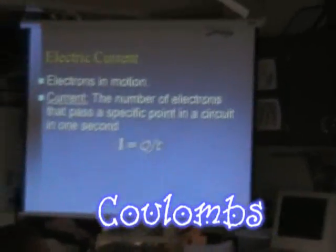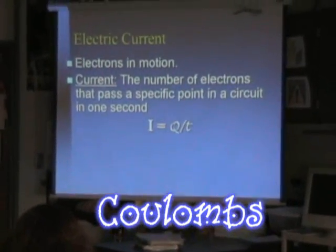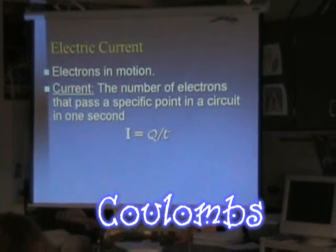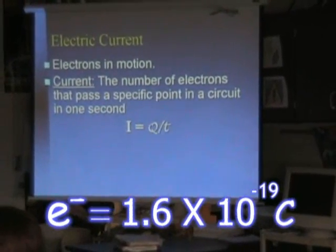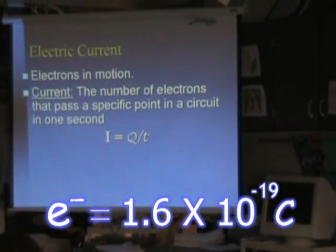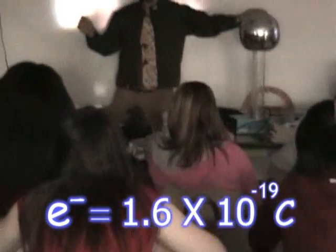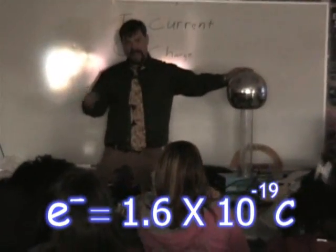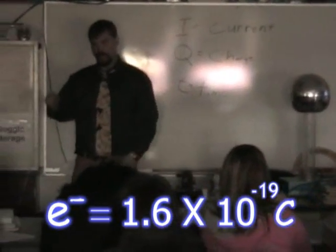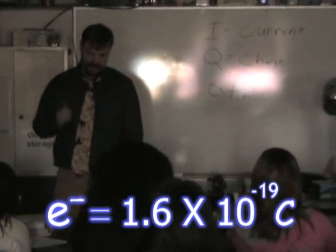In our last section we talked about Coulombs Law and static electricity. Each electron has a specific charge. Every time you add one electron, you add one more electron charge. Numerically, can you have half of an electron charge? No.